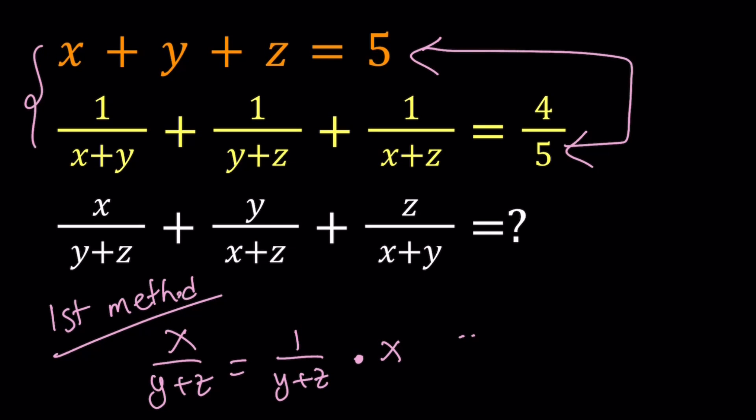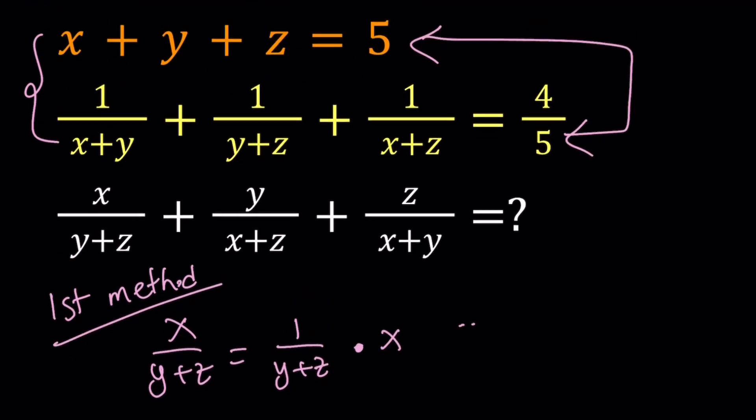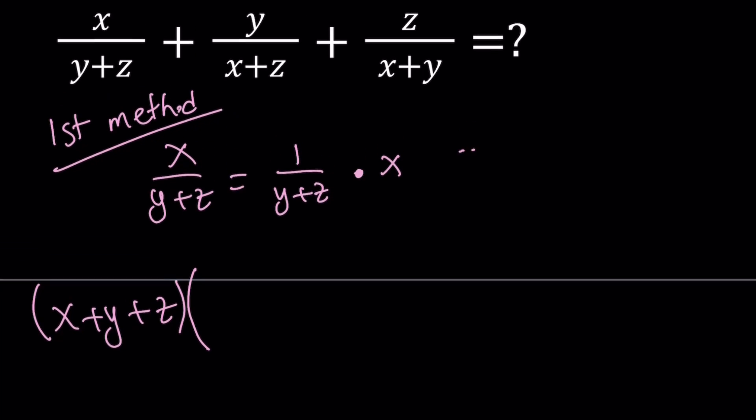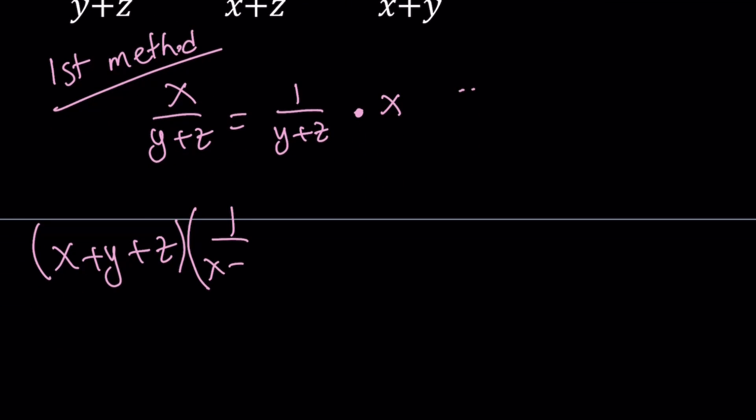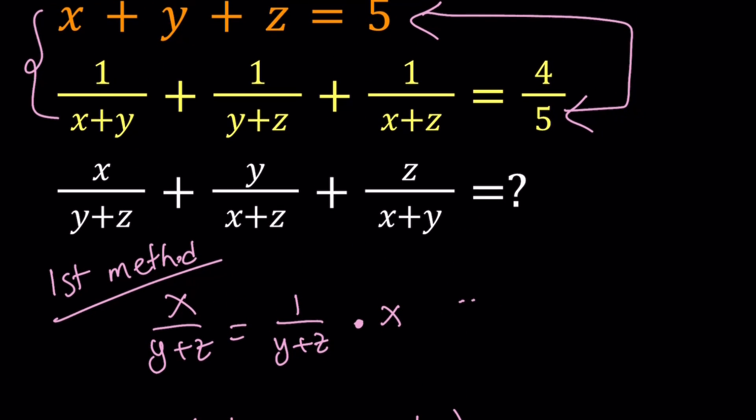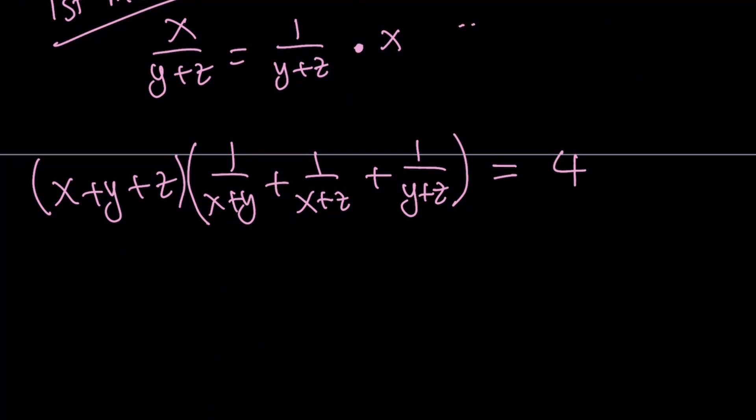When you're given two equations, what else can you do with them? You can add them, you can multiply, you can subtract, you can divide, so on and so forth. So let's go ahead and multiply x plus y plus z by 1 over x plus y plus 1 over x plus z plus 1 over y plus z. Let's go ahead and do it. And since one of them is equal to 5, the other one is equal to 4 fifths, when we multiply them, 5 is going to cancel out, and the product is going to equal 4.